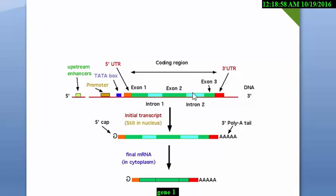Here we see exons shown in green color, and introns shown in light blue. We know exons are the coding regions that can code for protein, but introns cannot code for protein. So to produce a protein, we have to slice out or cut out the introns from the gene structure. In the initial transcription we get a pre-mRNA containing both introns and exons, but in the final mature mRNA we get only exons, because only exons can produce protein.